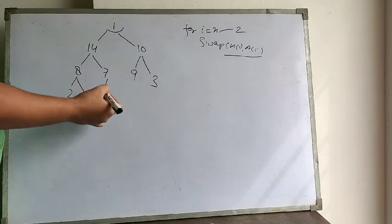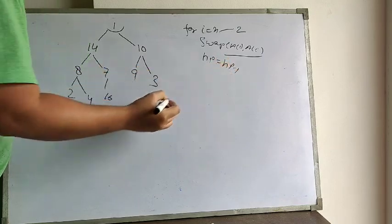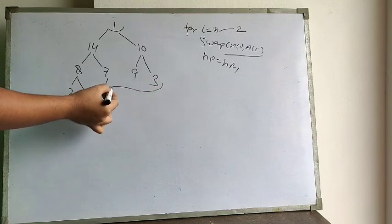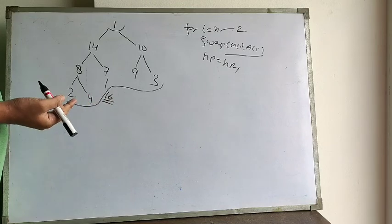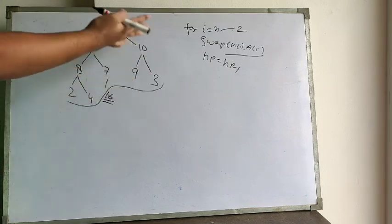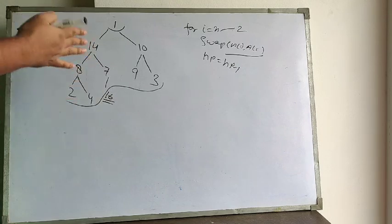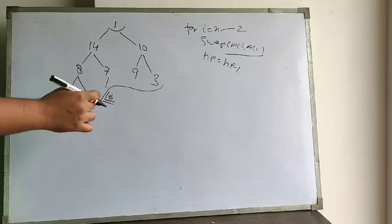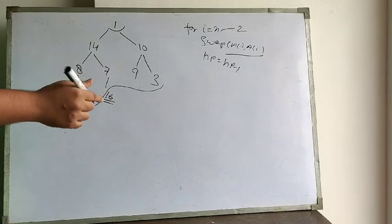After the swap we reduce the heap size by 1. This means the complete tree was the heap before, and now this is the heap — we extracted 16 as an already sorted element. We are not storing 16 anywhere else; we are just adjusting elements within the array, so no extra space is required by heap sort.